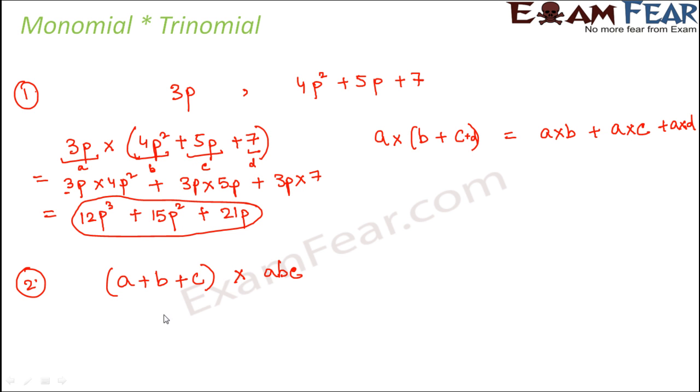We have it in the reverse form, that is (b + c + d) multiplied by a. So what should we do now? If you remember the commutative law, what does the commutative law say?